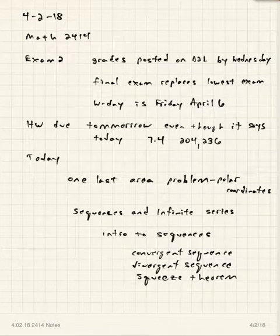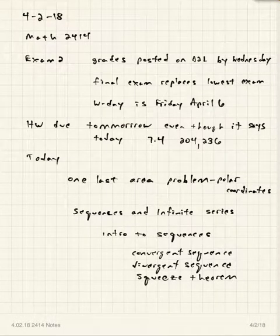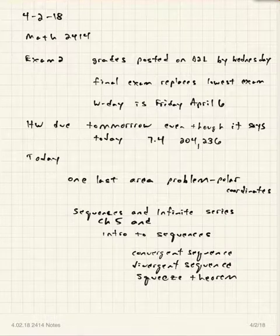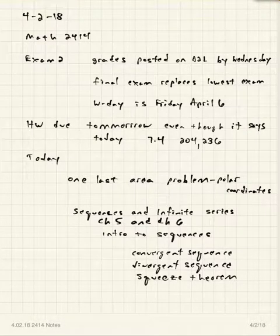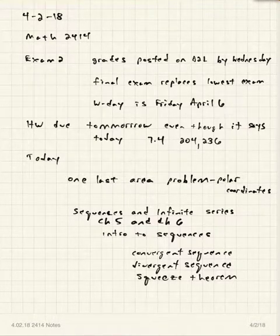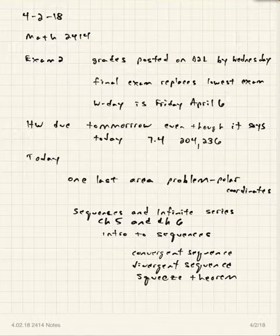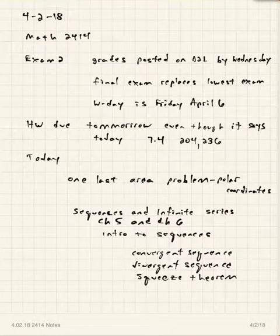Today we're going to cover one last area problem in polar coordinates, and then we're going to start talking about sequences and series, which is our last topic of the semester. This is chapters 5 and 6 in your OpenStax textbook. We'll be covering both chapters — they kind of go together. In fact, most calculus books combine sequences and series into one chapter; this is one of the few textbooks that splits them into two separate chapters.